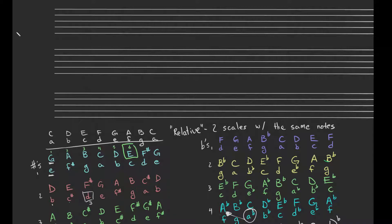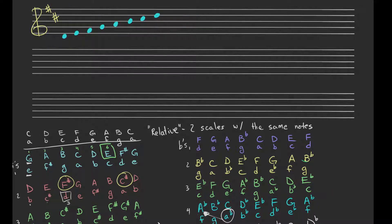Now let's look at key signatures. For D major, we had two sharps — F# and C# — because of the 'fat cats' mnemonic. If you want to write a D major scale, you can just write your key signature and then not worry about sharps and flats in the scale itself. You write D E F G A B C D and the scale is automatically correct — the sharps are implied by the key signature.